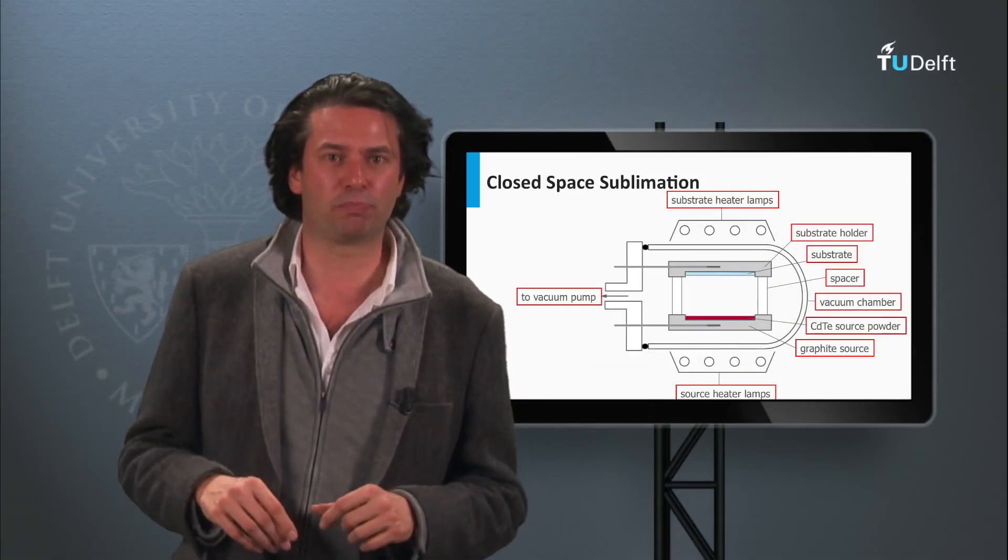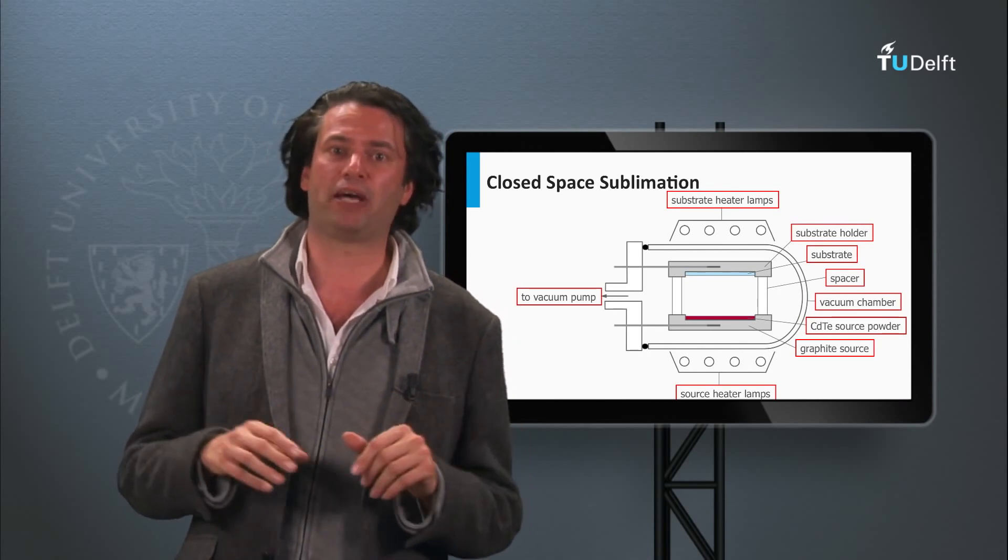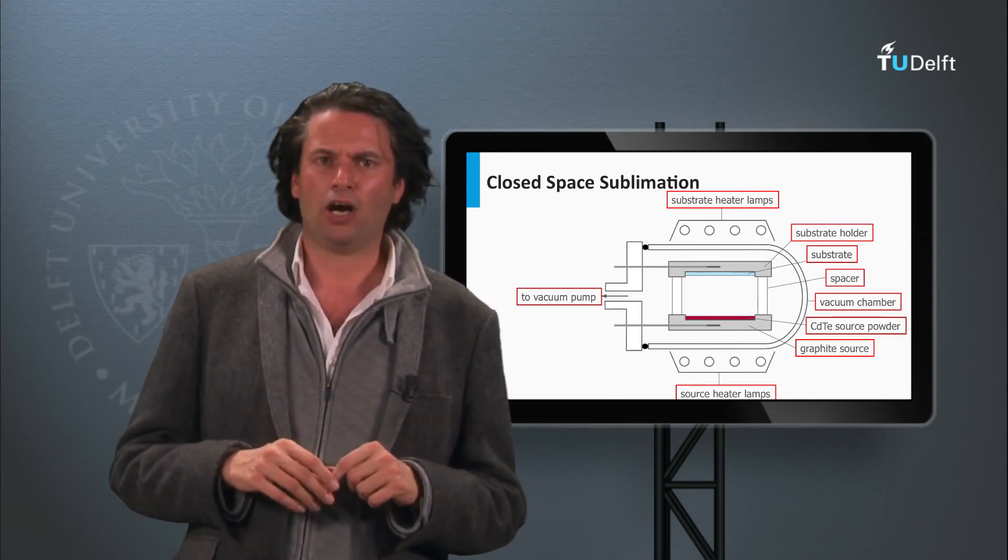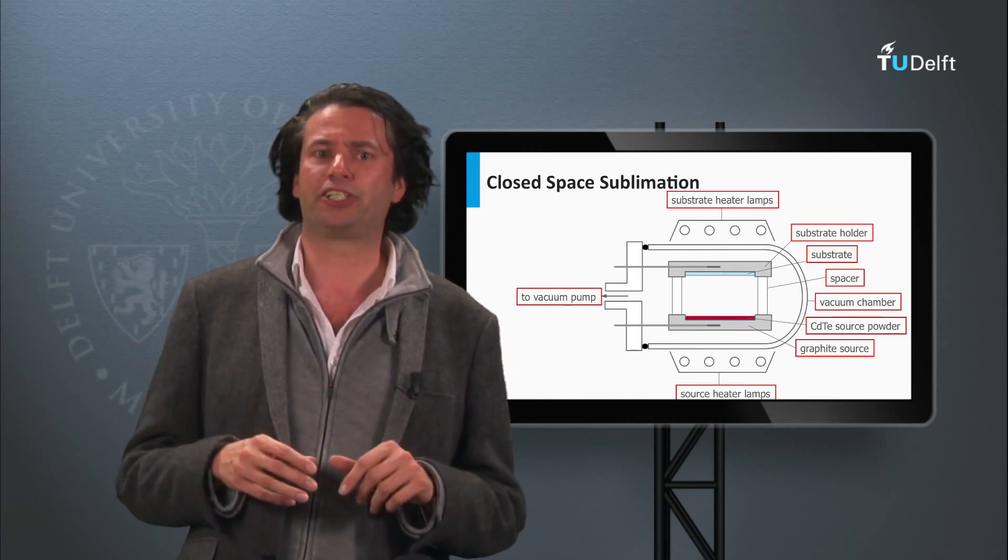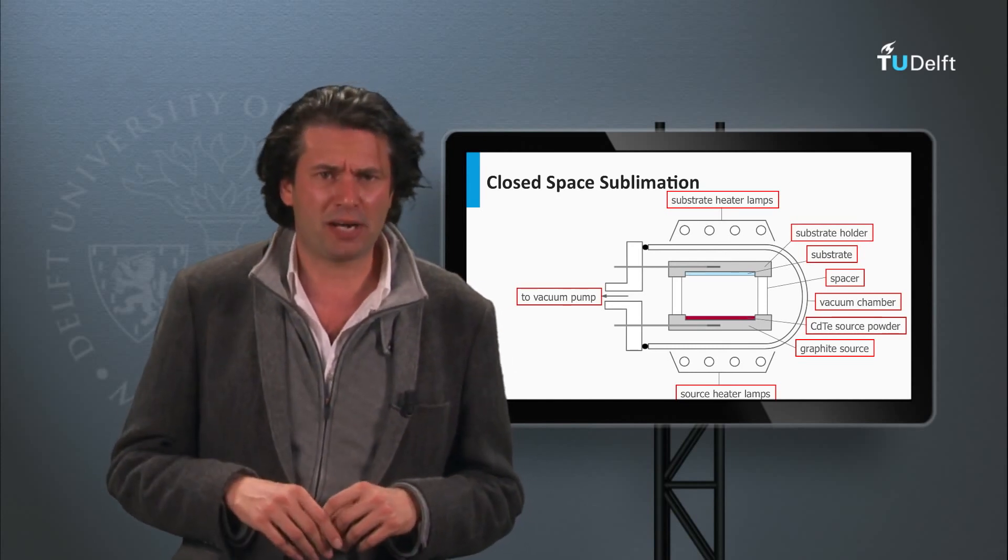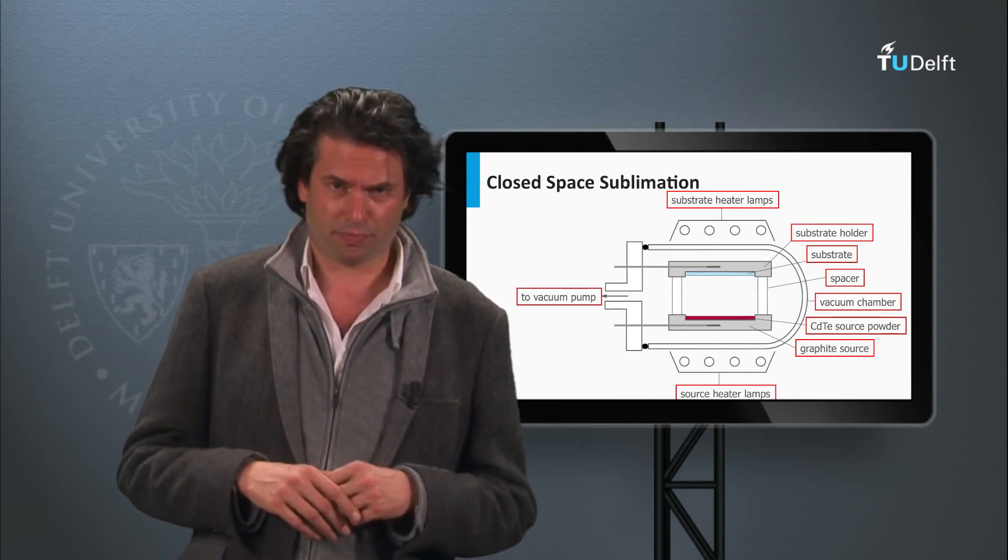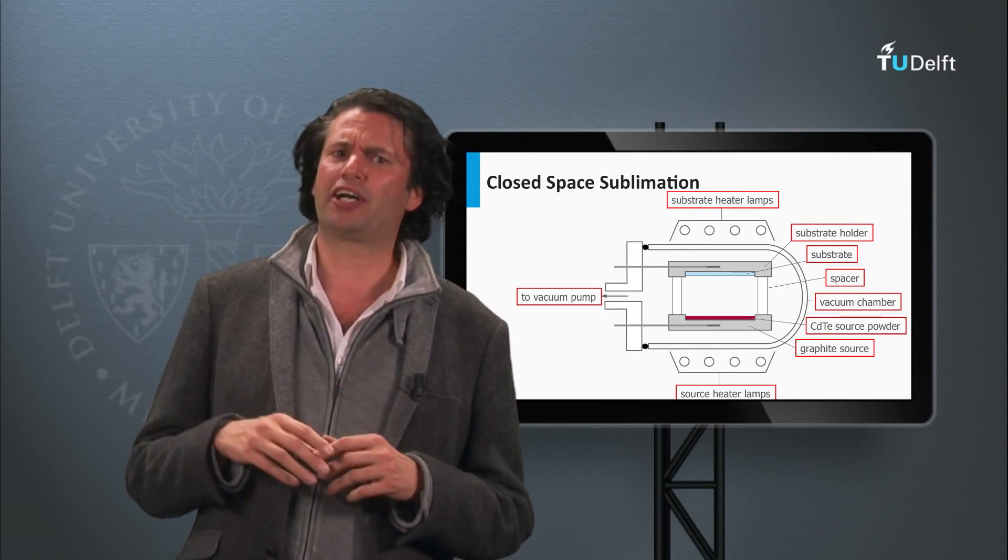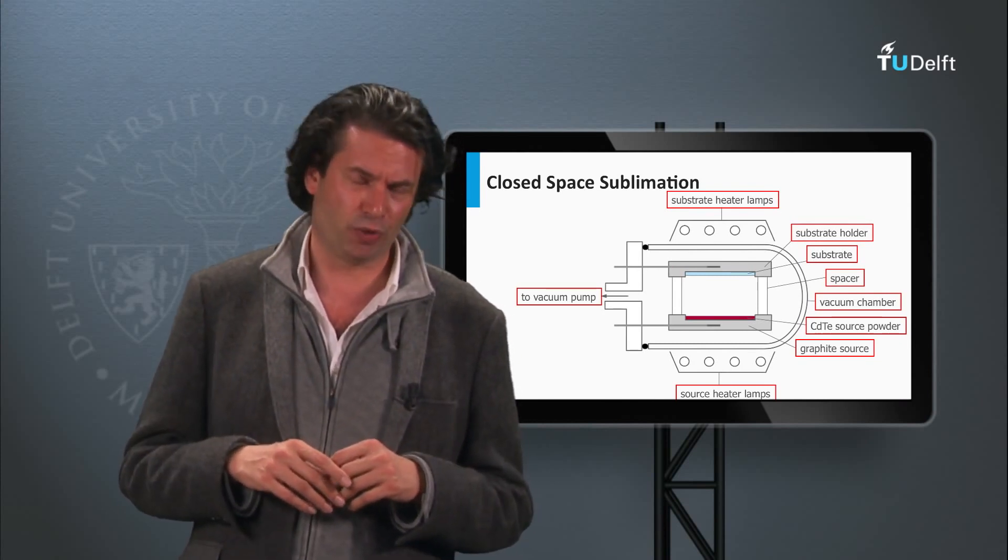First Solar and Antec are companies producing the cadmium telluride solar modules using the closed space sublimation method. Among new start-ups moving into the cadmium telluride PV technology are Calyxo, Primestar Solar from General Electric and Abound Solar. However, First Solar is by far the largest cadmium telluride manufacturer in the world nowadays.